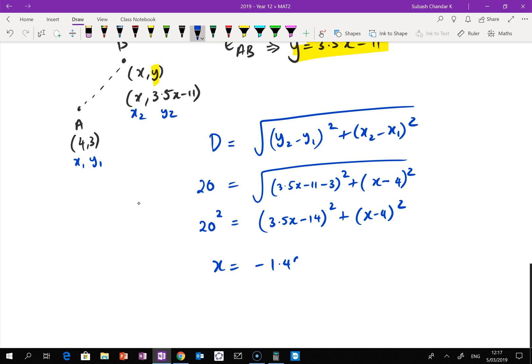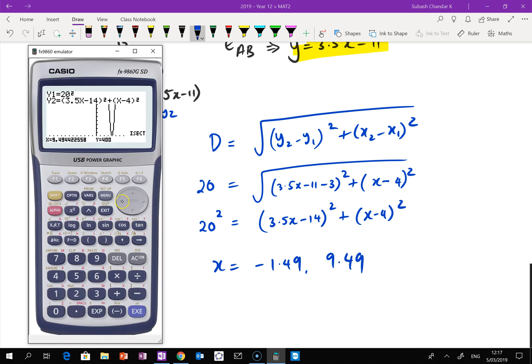So x is equal to negative 1.49 or 9.49. So having a look again, when you press G-solve, you press isct, which is the intersection point, and it gives you the first one, which is negative 1.49 and the second one, which is 9.49. So that's your x values.